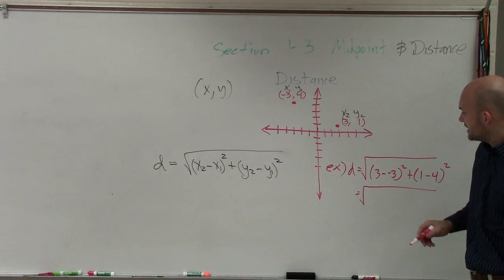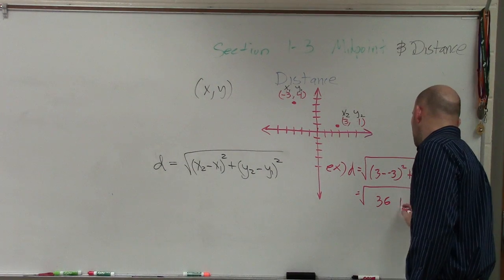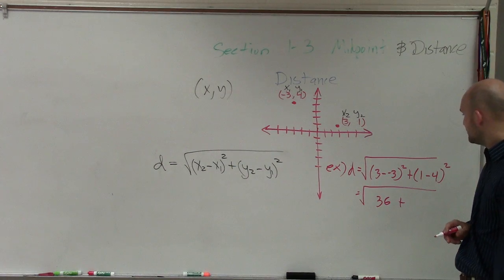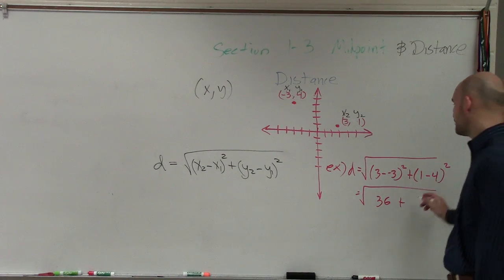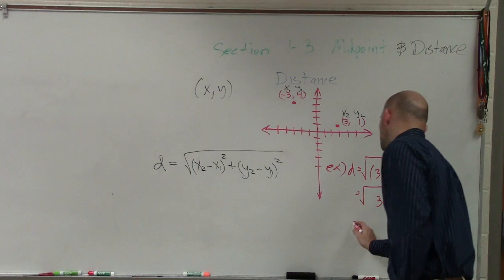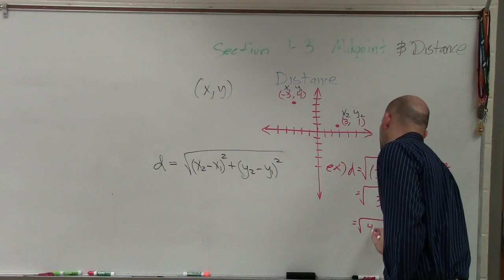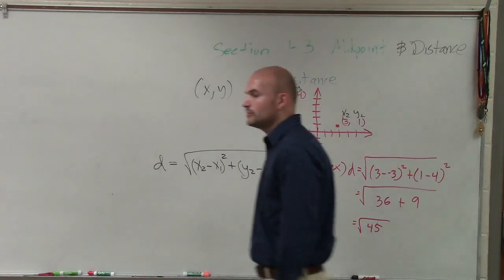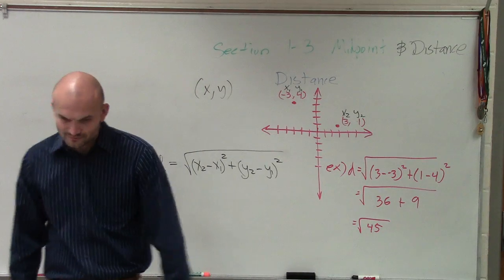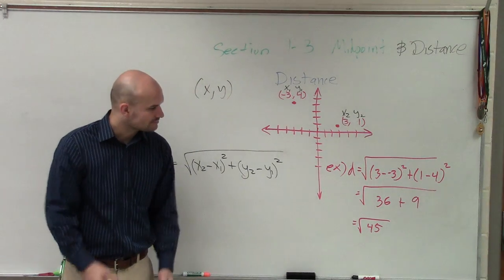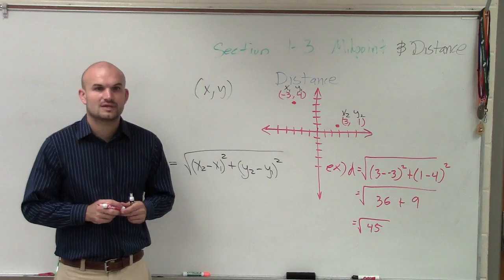Well, 3 minus negative 3 is 6, 6 squared is 36, plus 1 minus 4 is negative 3, negative 3 squared is 9. That equals the square root of 45. Did you see where I got it?